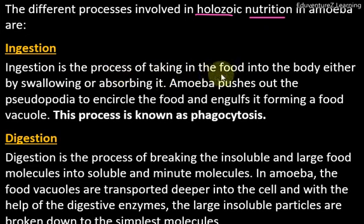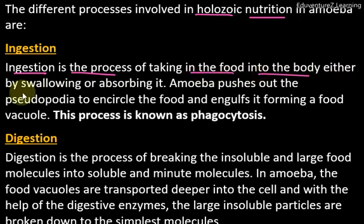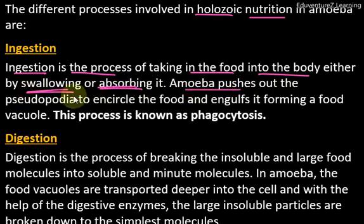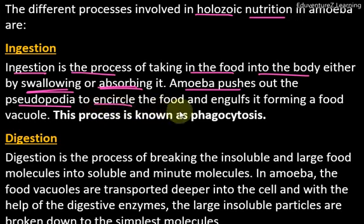Ingestion is the process of taking food into the body, either by swallowing or absorbing it. Amoeba pushes out pseudopodia to encircle the food, because amoeba does not have a mouth like human beings or animals to insert food. So they create pseudopodia and encircle the food, and then engulf it into their body.